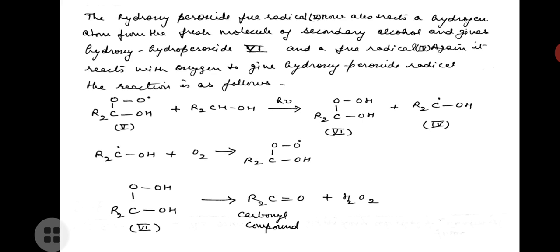The hydroxy peroxide free radical abstracts a hydrogen atom from a fresh molecule of secondary alcohol and gives hydroxy hydroperoxide and a hydroxy carbon radical again. This hydroxy carbon radical reacts with oxygen to give a hydroxy peroxide radical. The reaction is: hydroxy peroxide radical plus secondary alcohol on irradiation forms hydroxy hydroperoxide and hydroxy carbon radical, which again reacts with O2 to form hydroxy peroxide radical.